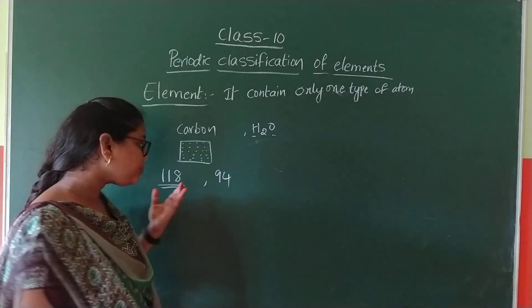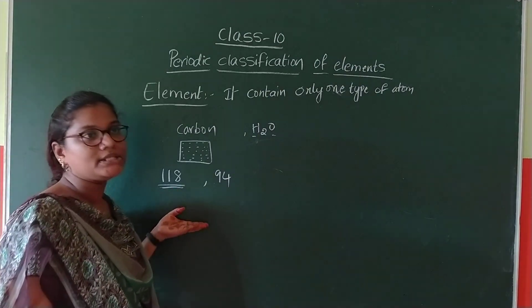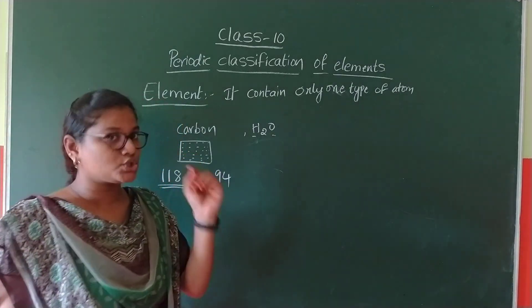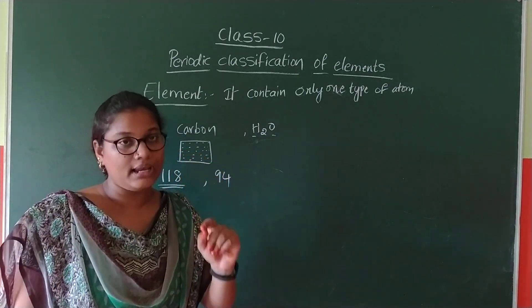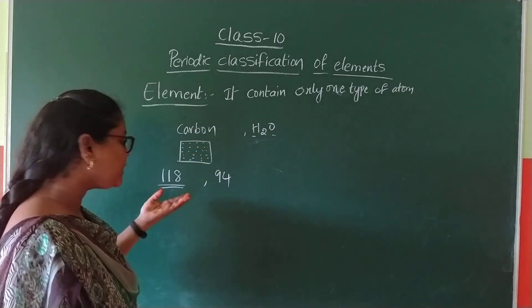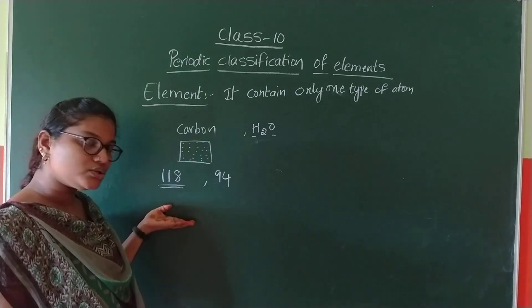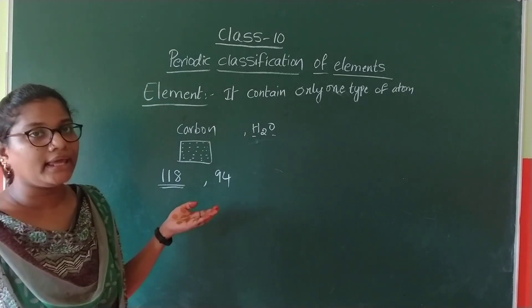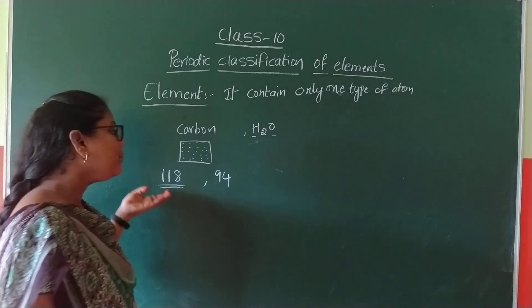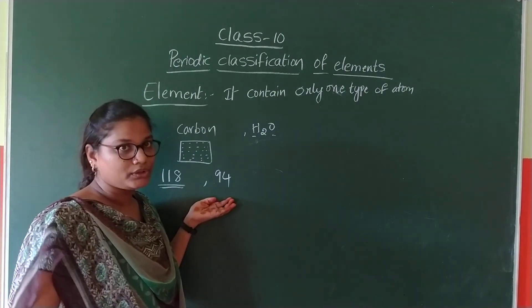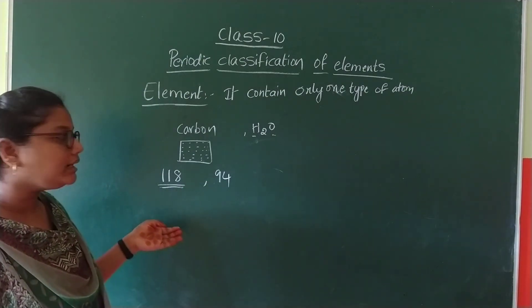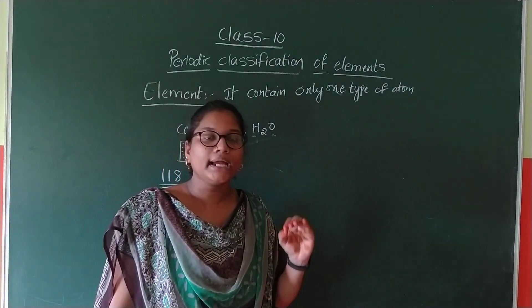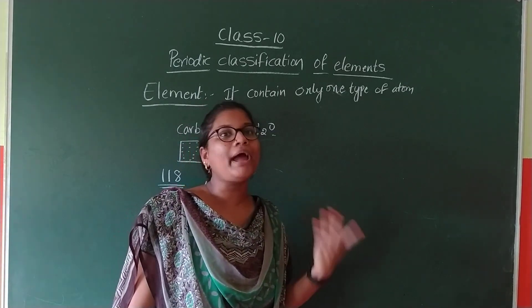The remaining elements are synthetic elements — that means man-made elements. For example, tungsten. In our bulbs, we have a tungsten filament. Tungsten is one of the elements and it is a man-made element. We know 94 elements are naturally occurring, found in soil, air, and moisture.